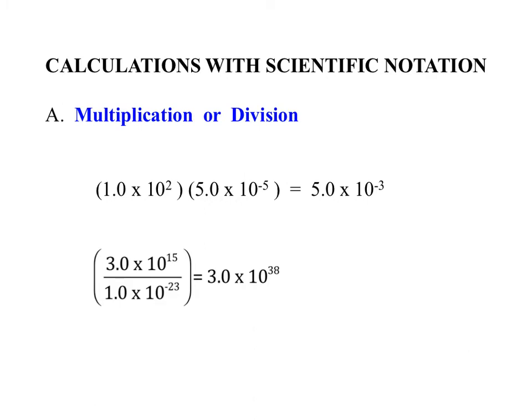For multiplication and division with scientific notation: for multiplication, you multiply the numbers and add the exponents. 1 × 5.0 = 5.0, and 10² × 10⁻⁵ gives 10⁻³. For division, you divide the numbers first to get 3, then subtract the exponents. Here that's 15 minus a negative 23, which equals positive 38. So you subtract the exponents and that's how you get 38.